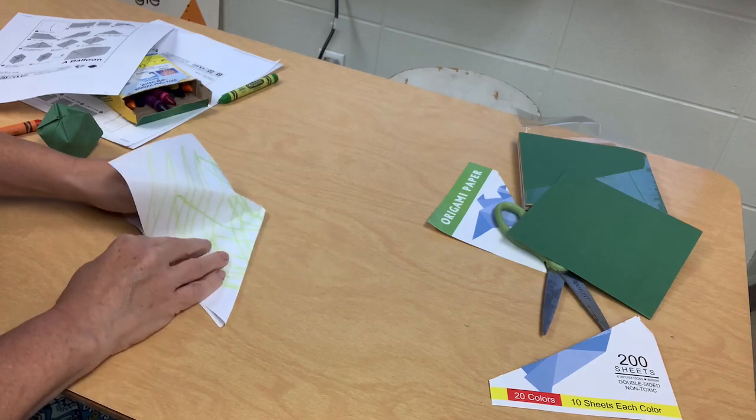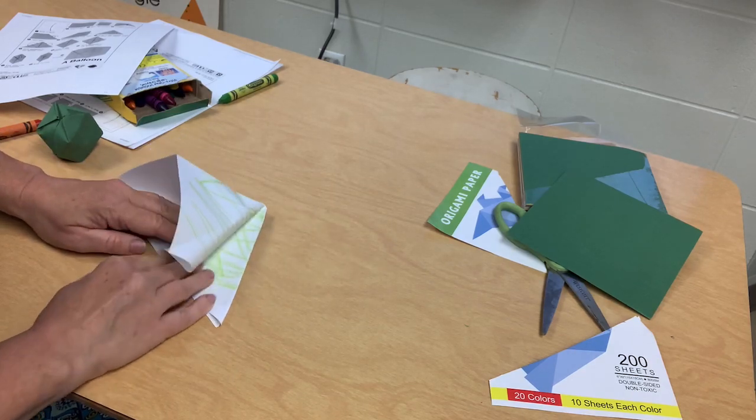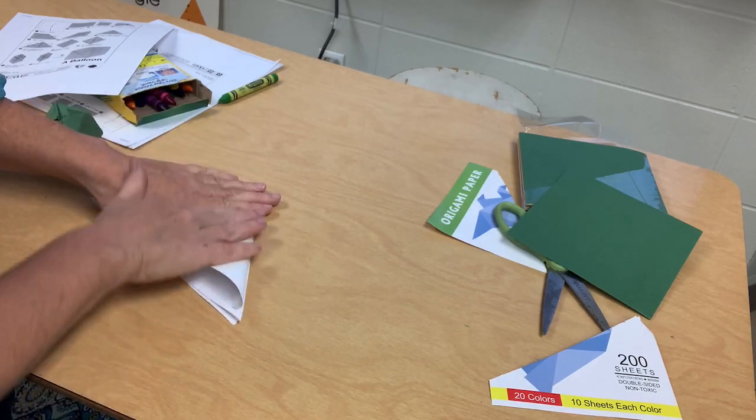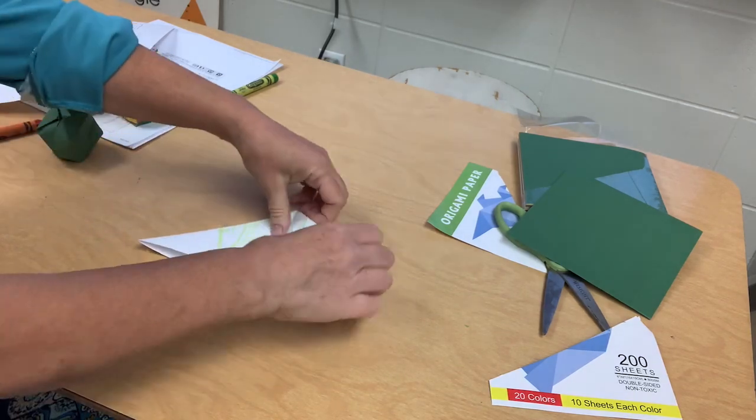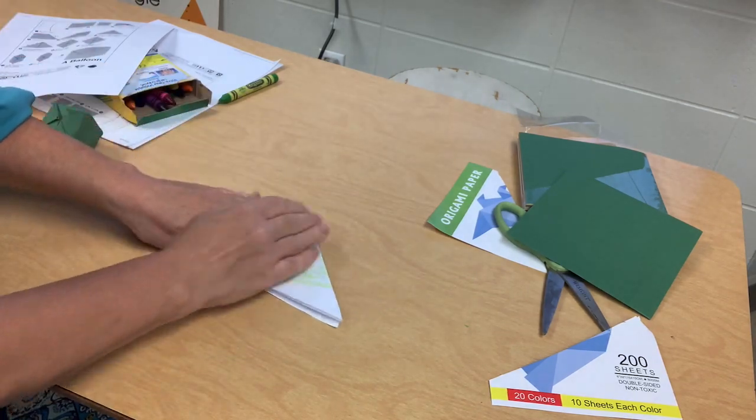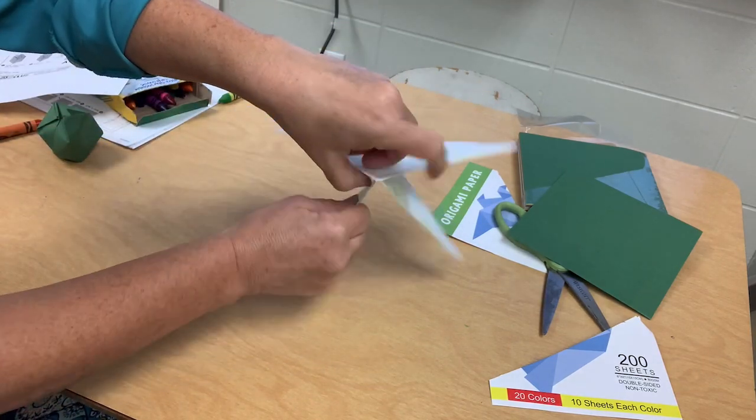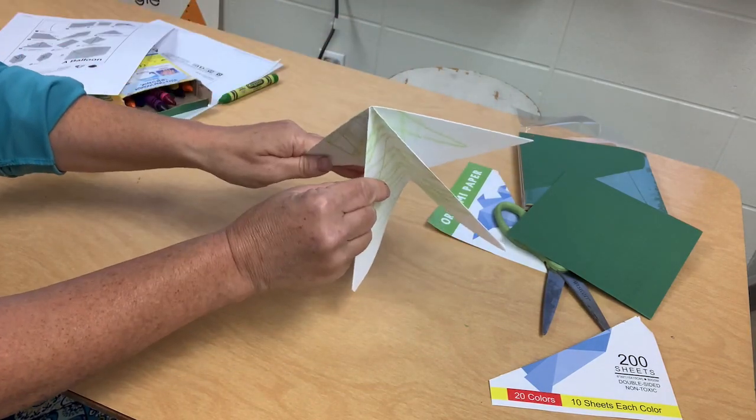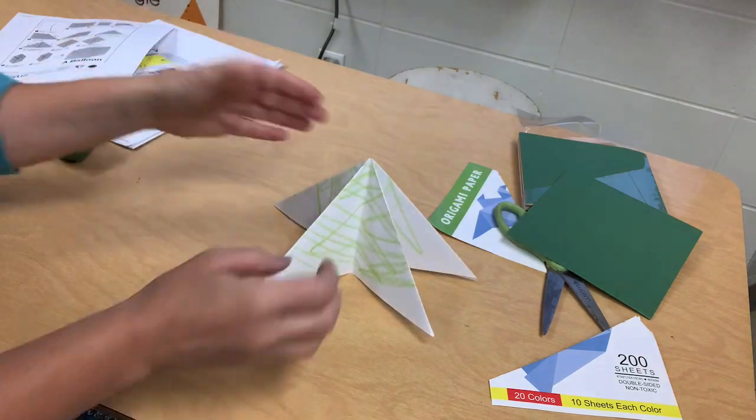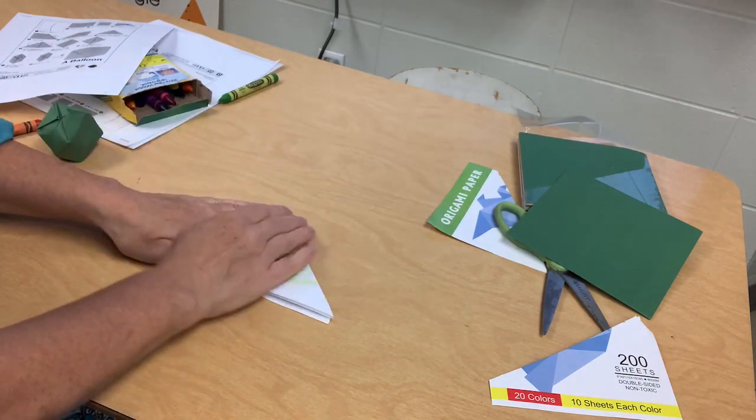That can be challenging if you're just starting out origami, but it's not impossible. And then we fold it this way. Now we have something that looks like this. It looks like a little starfish. So if you were making a starfish, you'd be finished. But we're not because we're making a balloon.